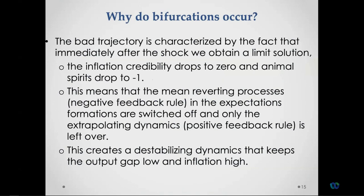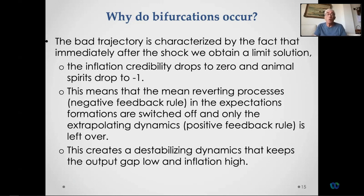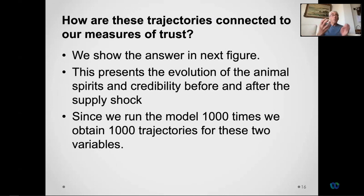Why do we get these bifurcations? The bad trajectory is characterized by reaching a limit solution immediately after the shock: inflation credibility drops to zero, animal spirits fall to minus one — extreme pessimism. The mean-reverting processes — the negative feedback rules in expectations formation — are switched off, and only the extrapolating positive feedback dynamics remain. This is the fundamental reason: a very large shock brings the system to the limit of extreme pessimism and total loss of trust in the central bank.